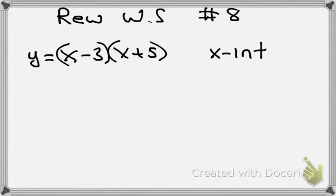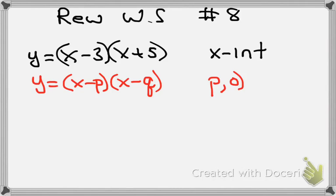I mean, this is just screaming at me. Your x-intercepts are this, all right? Because this is written in the form y equals x minus p times x minus q. And my x-intercepts are going to be p,0 and q,0.